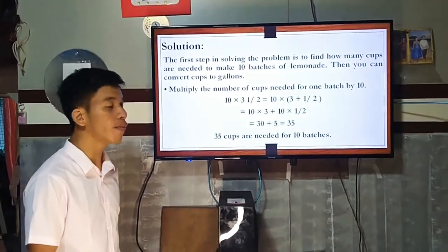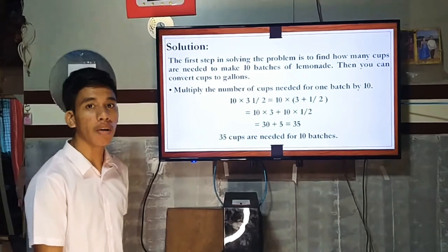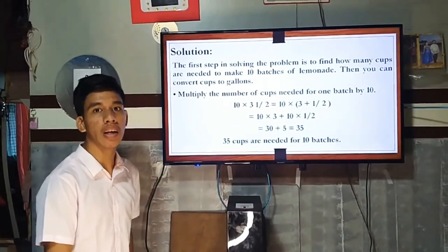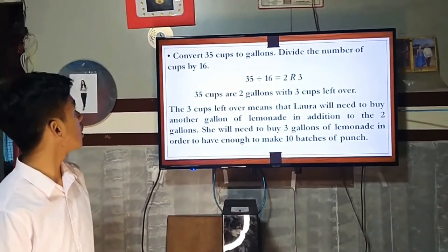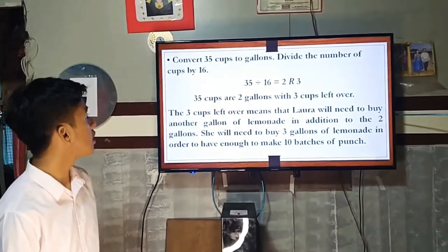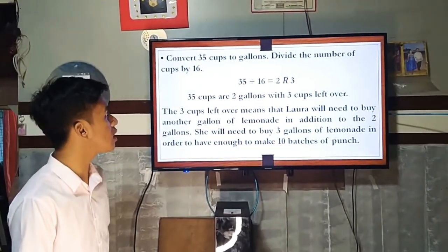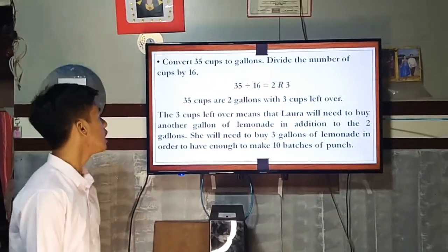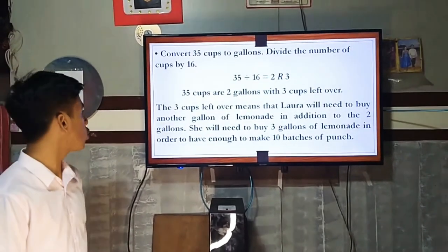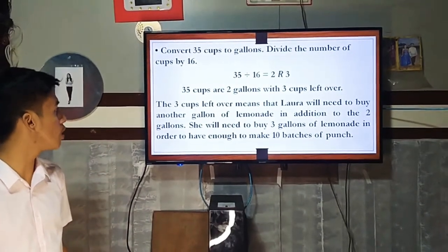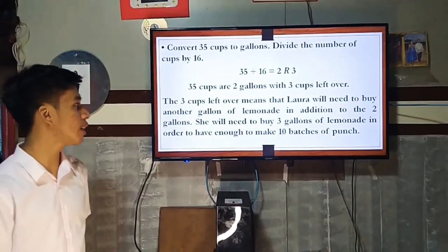Therefore, 35 cups are needed for 10 batches. Now convert 35 cups to gallons by dividing by 16, since 16 cups make one gallon. 35 divided by 16 is 2 remainder 3. The 3 cups left over means Lara will need to buy another gallon in addition to the 2 gallons. She will need to buy 3 gallons of lemonade in order to have enough to make 10 batches of punch.